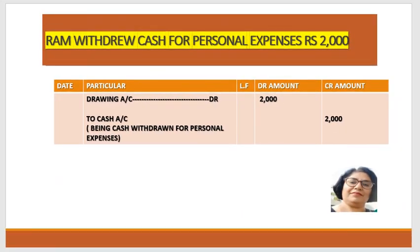The second transaction: Ram withdrew cash for personal expenses. So here the drawing account is involved — drawing is a reduction in capital. We have a drawing account debit and cash credit. Cash is an asset which has decreased, so it goes to the credit column. The narration is written summarizing the transaction.